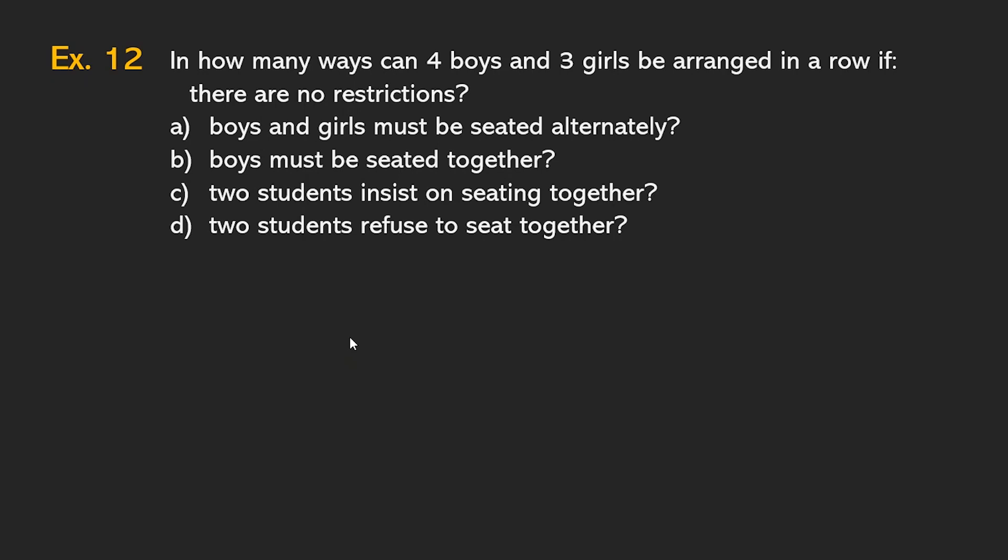Let's have example number 12. In how many ways can four boys and three girls be arranged in a row if there are no restrictions? So I think that's the first question.